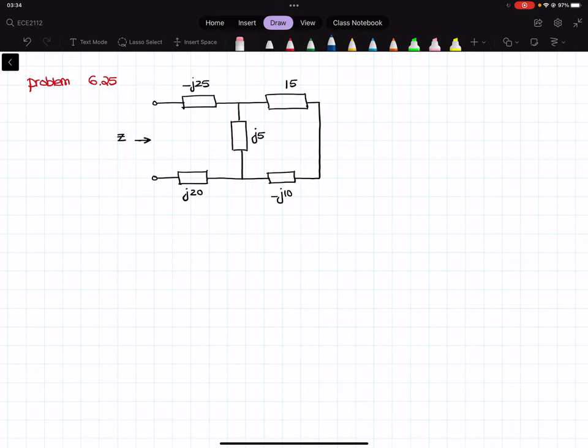This question is similar to the problem that you had in your exam 3, in which we have to find the equivalent impedance. So, if I call this impedance number 1, number 2, 3, 4, and 5, if I start from the right, I can say that Z1 is in series with Z2.